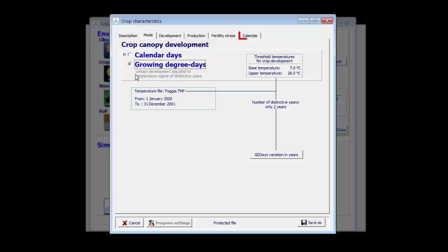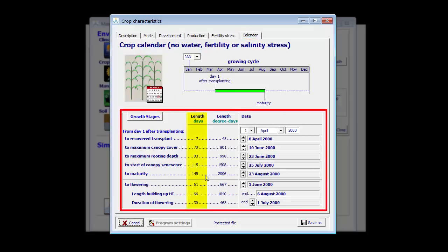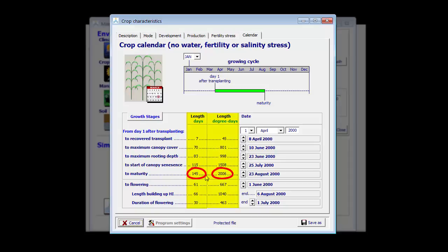Let's go back to calendar. The calendar remains exactly the same. It requires 145 days to reach maturity. AquaCrop now expressed that in growing degree days, which corresponds with 2006 growing degree days.